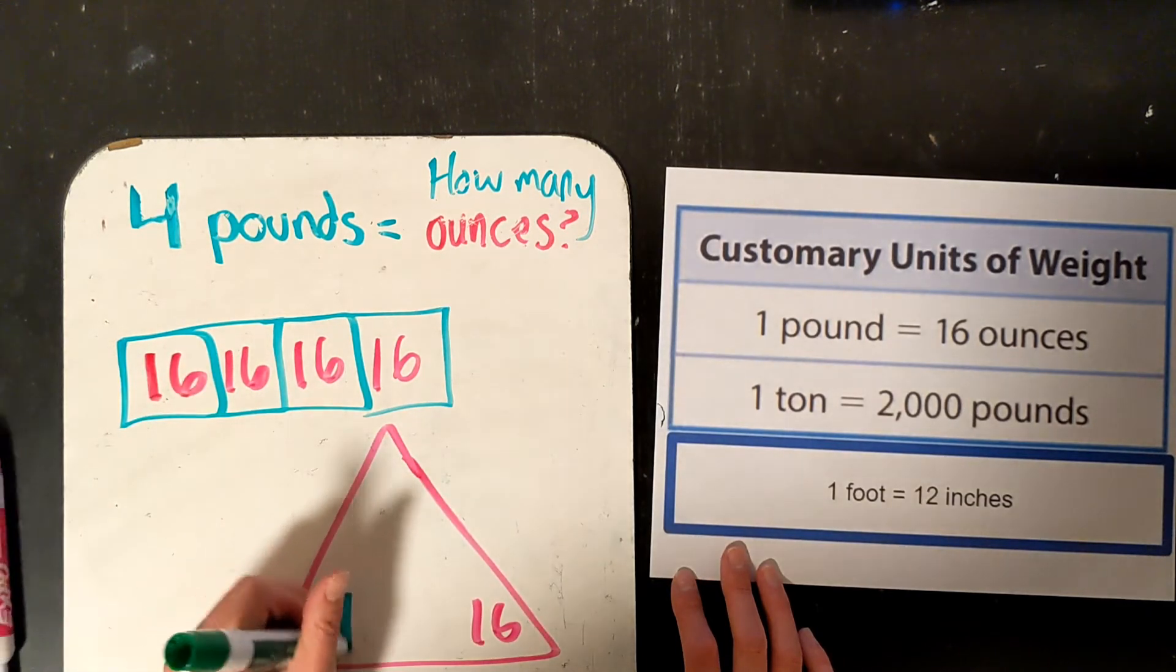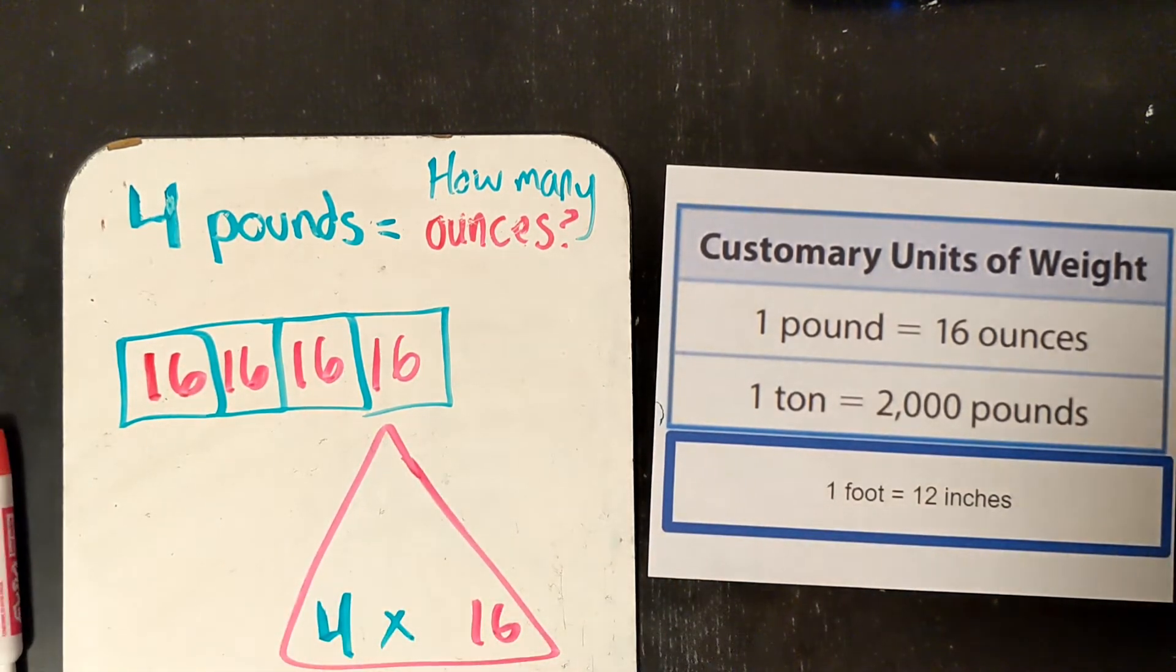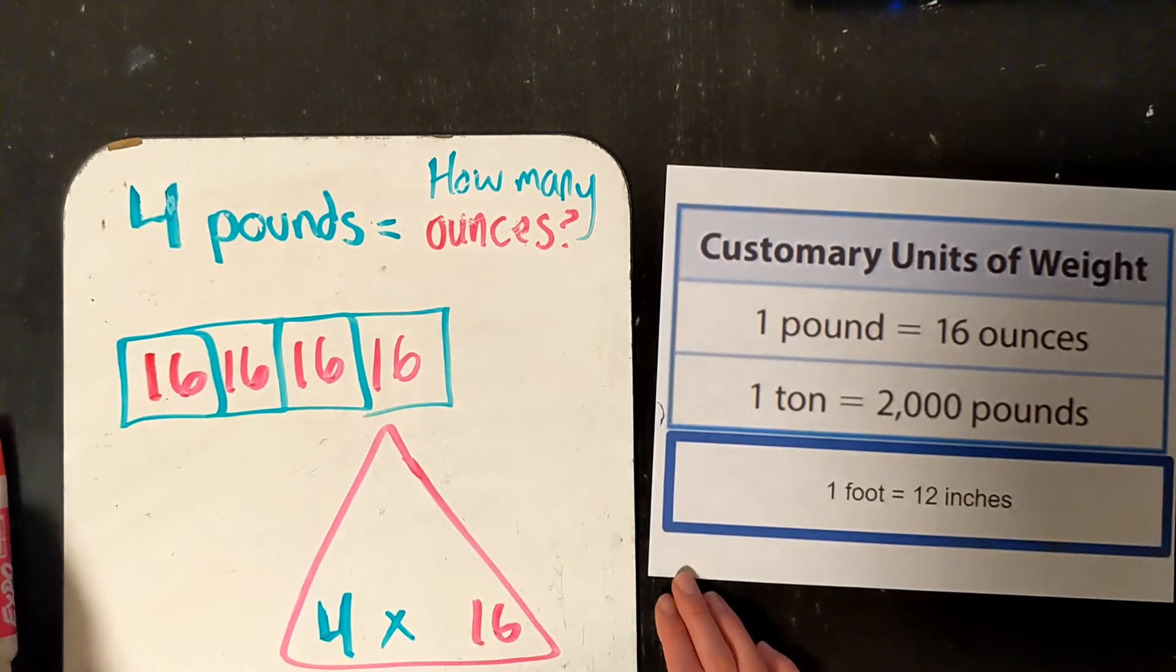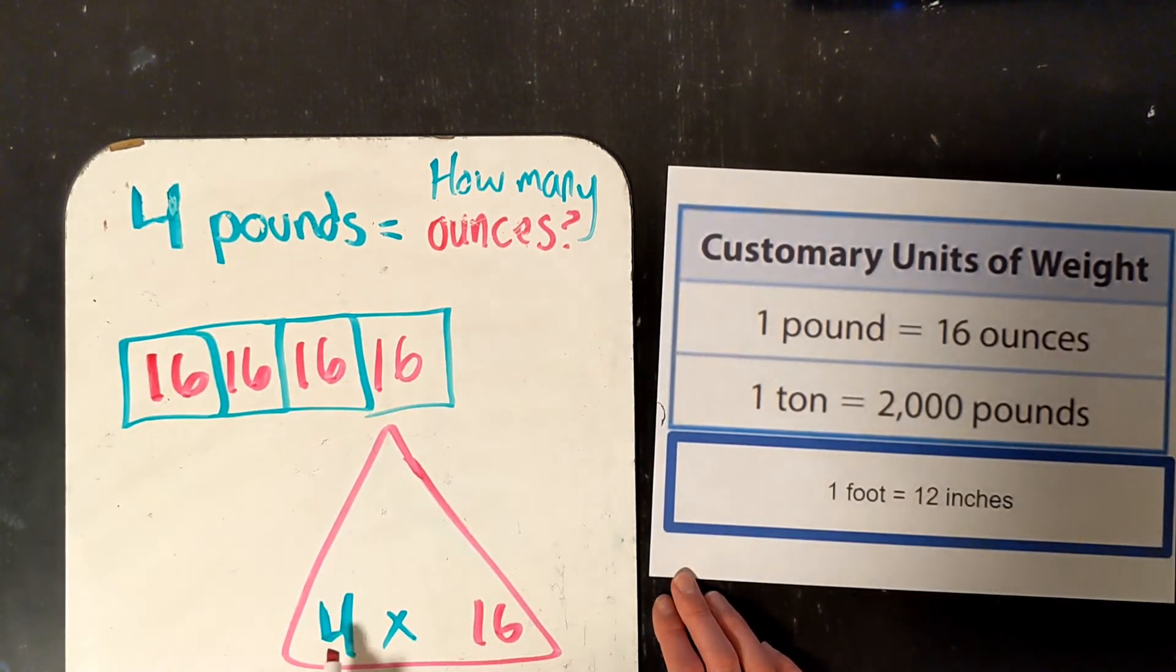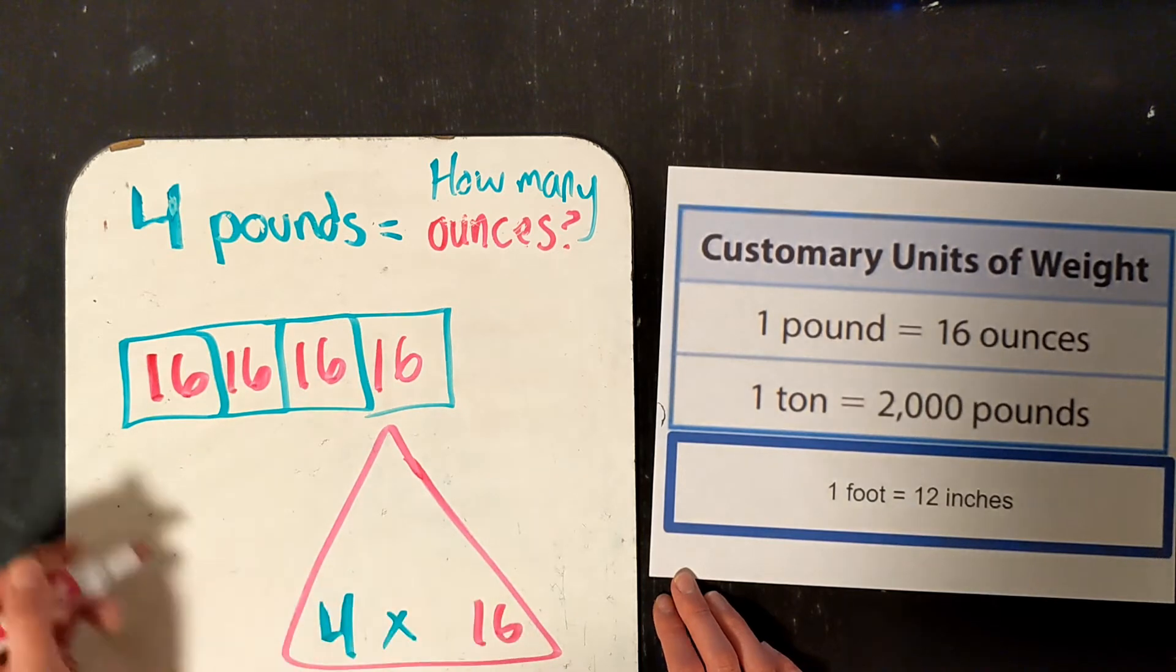So go ahead and try 4 times 16. Pause the video and come back. All right, so for 4 times 16, I am going to use partial products. So I am going to do 4 times 10 and then 4 times 6.